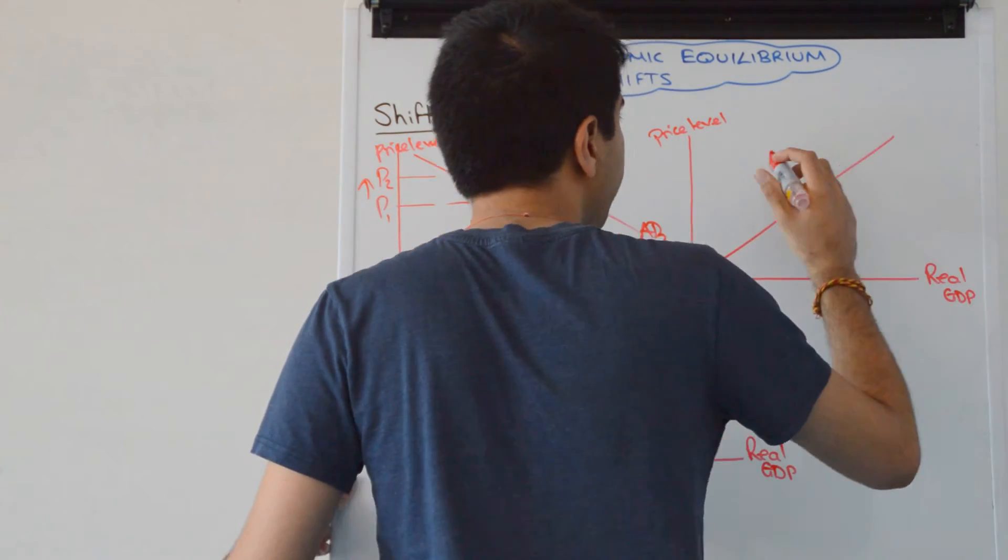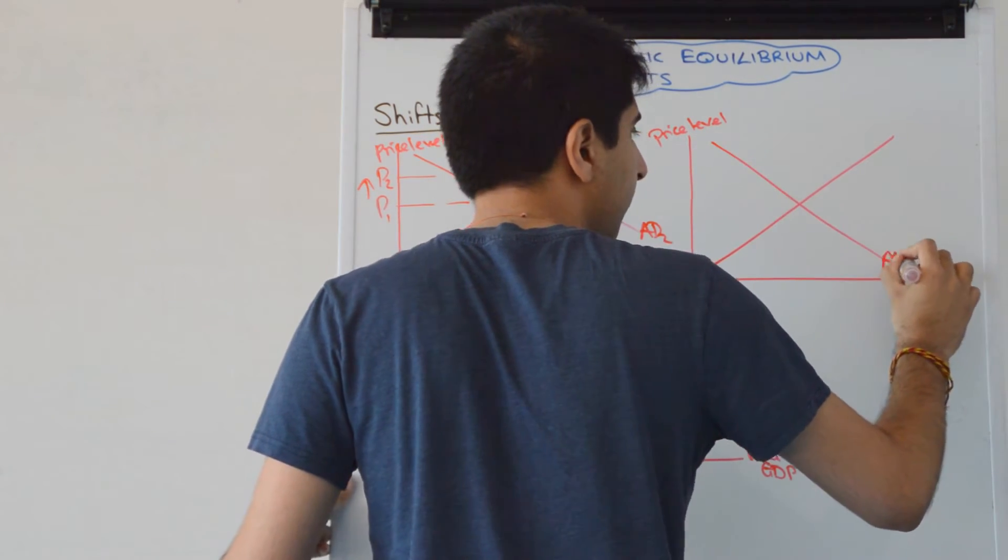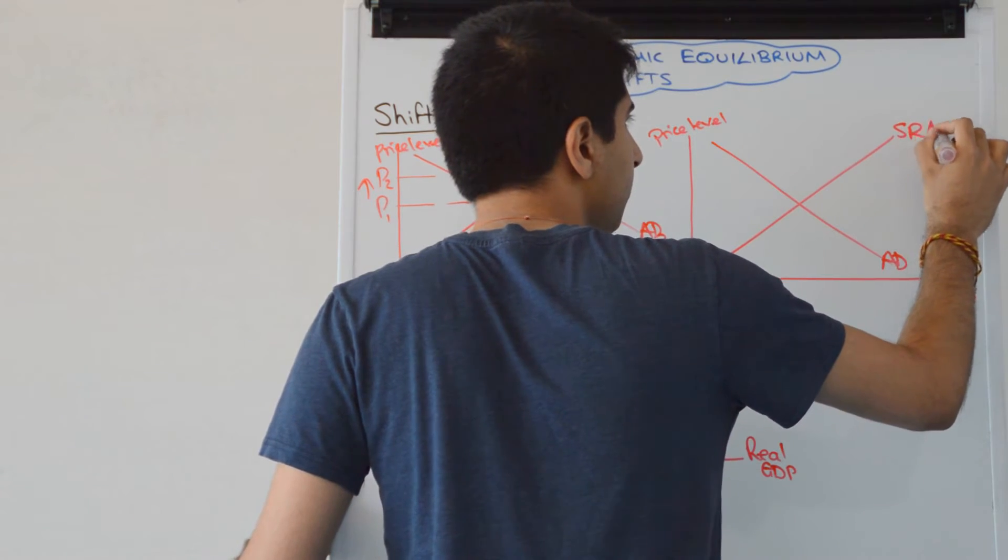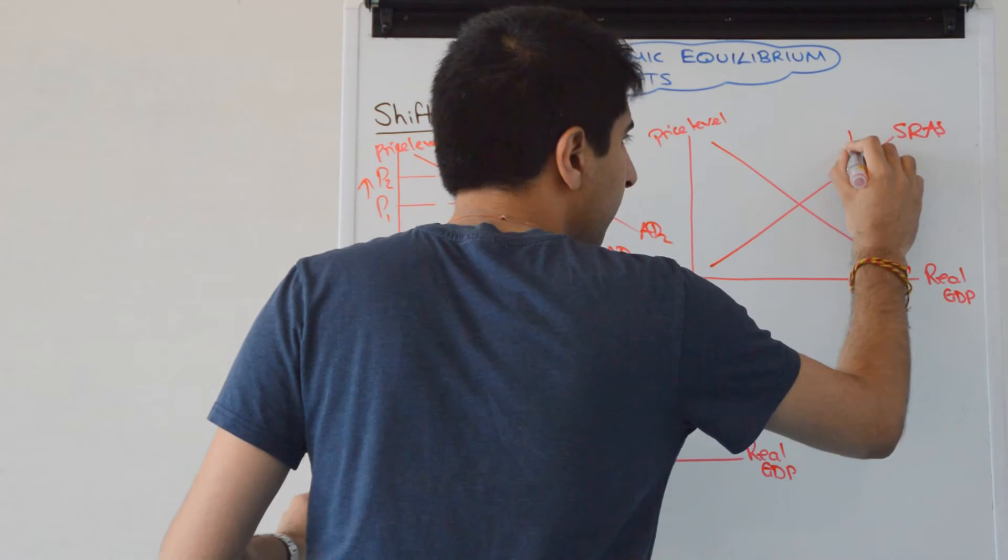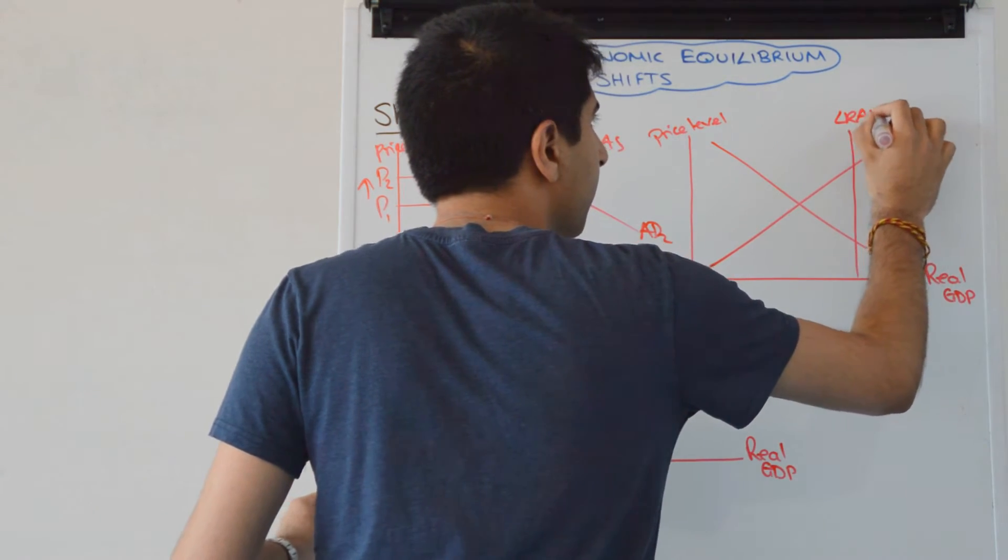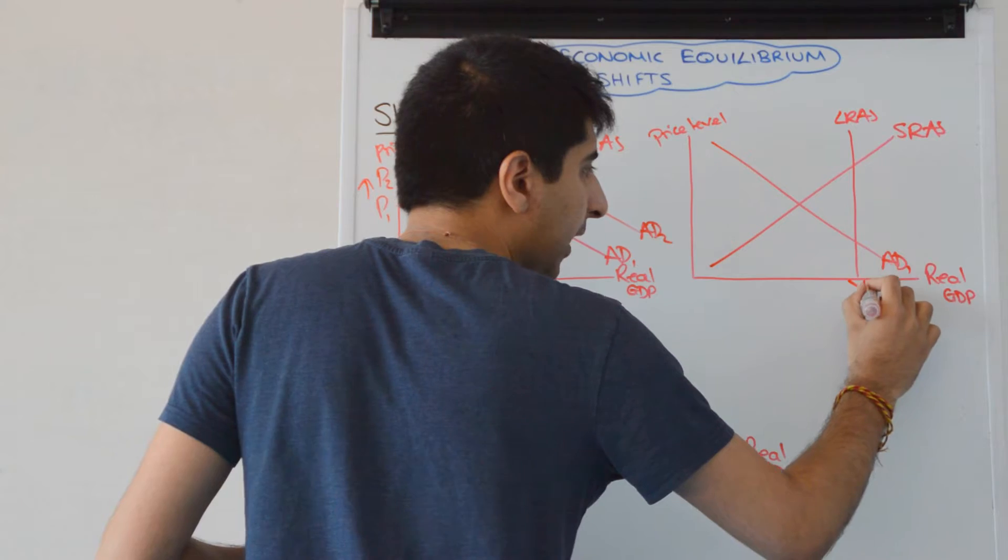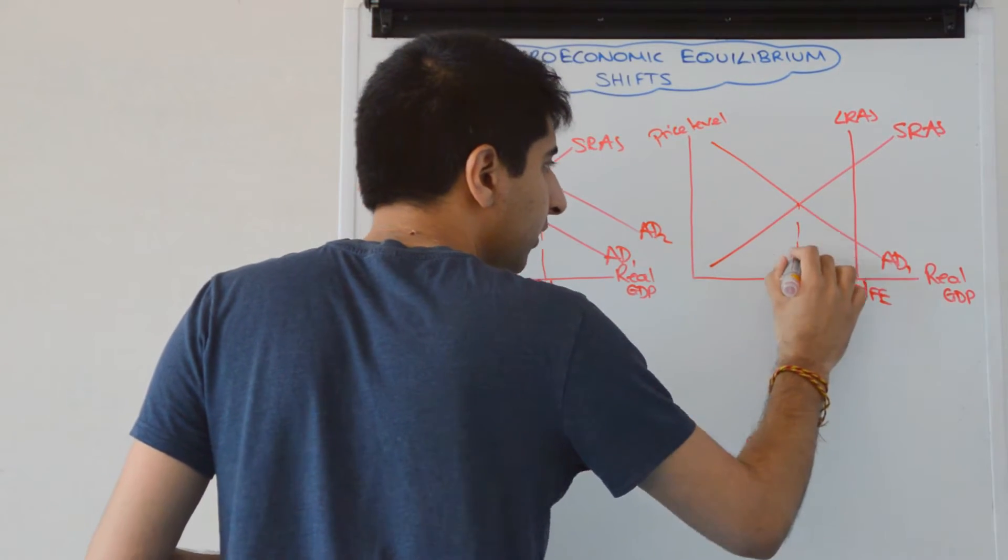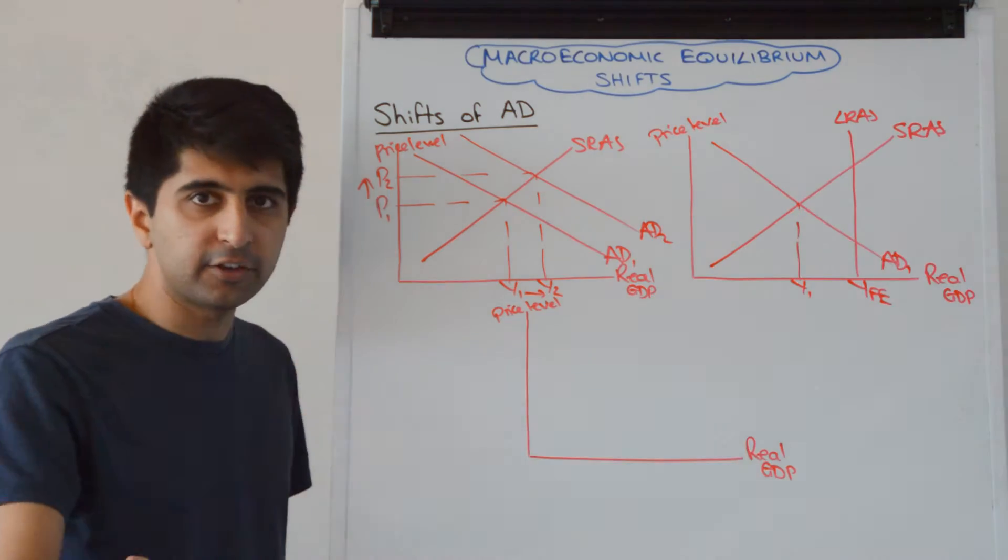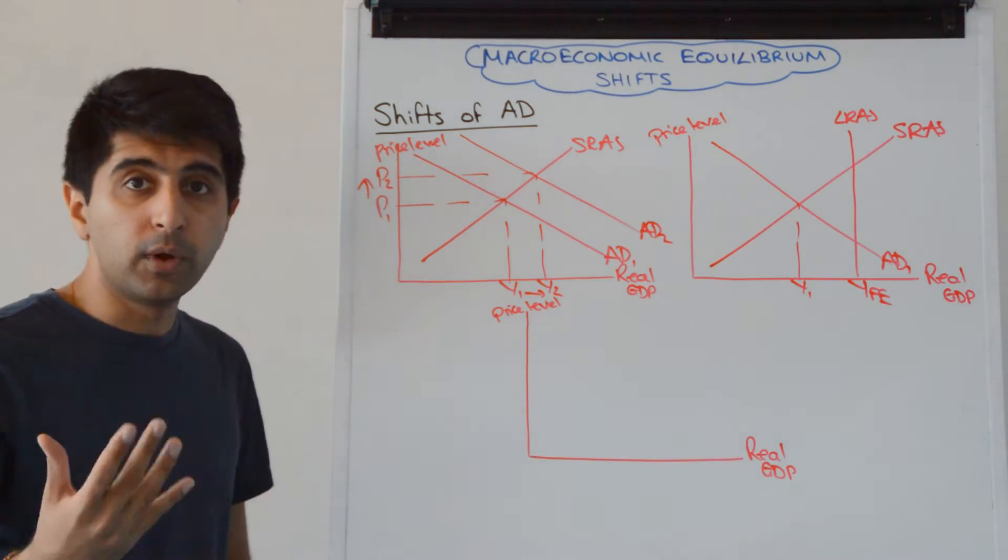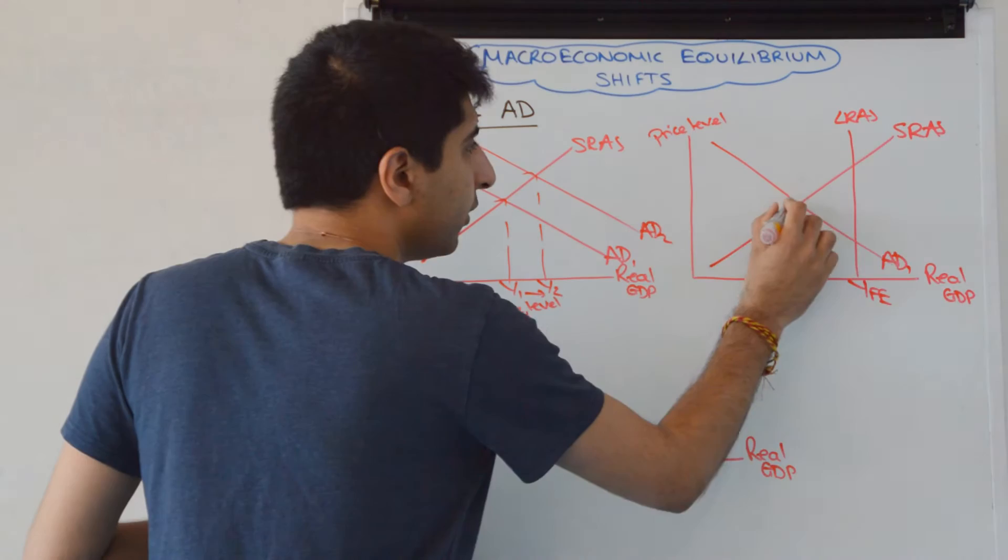So we start in the same way, AD and SRAS, there we go. But now we can stick on an LRAS curve, maybe over here. We need to label now. So there's full employment, there is currently a gap in the economy, a deflationary gap, a recessionary gap, a negative output gap, whatever you want to call it, with a price level of P1.